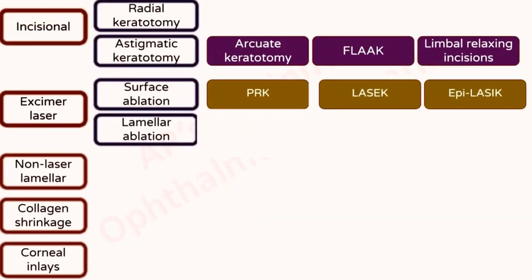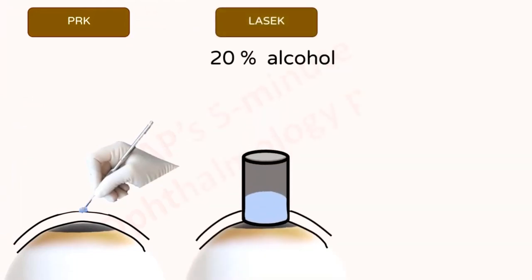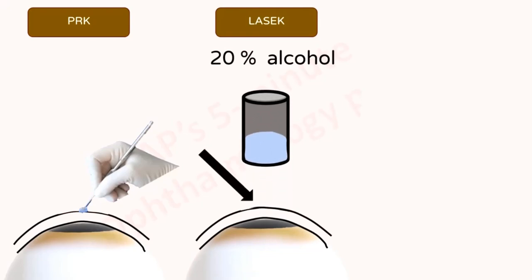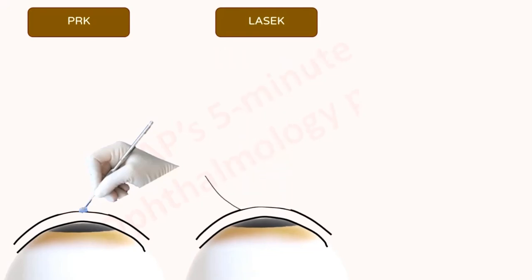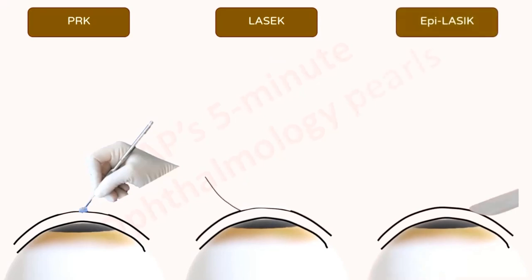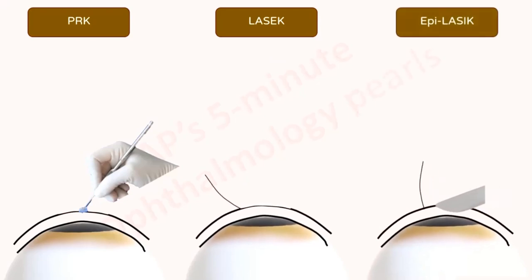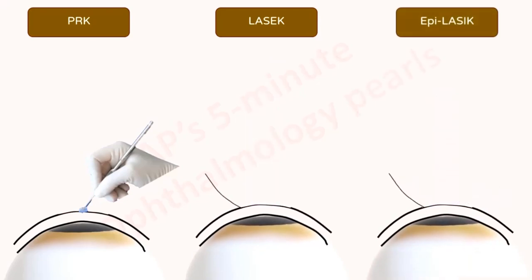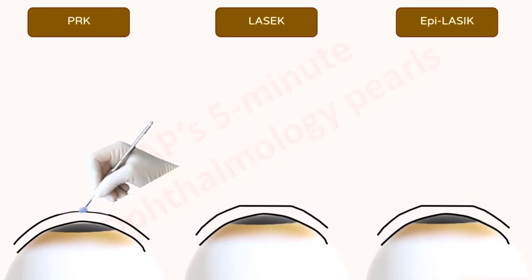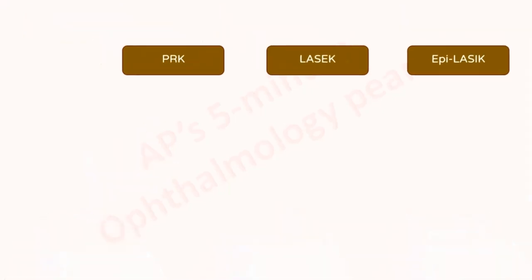LASEK and EPILASIK are variants of PRK. In PRK, the epithelium is removed and discarded. In LASEK, the epithelium is raised as a flap by first loosening it by means of 20% ethanol. In EPILASIK, the epithelial flap is created by means of a femtosecond laser. After raising the flap, ablation is done in both by means of an excimer laser, and the flap is then replaced. The three procedures differ mainly in the way the epithelium is handled.